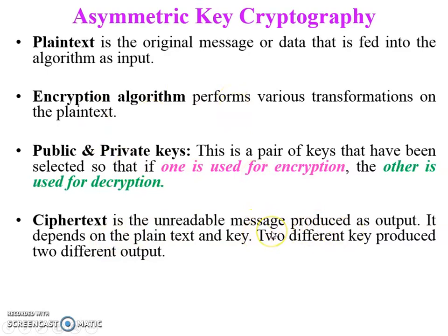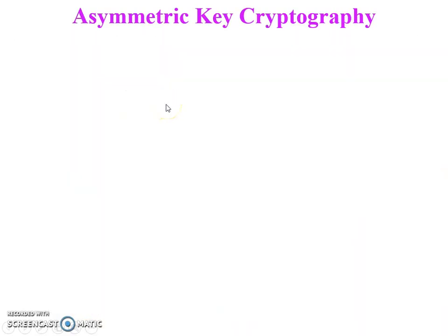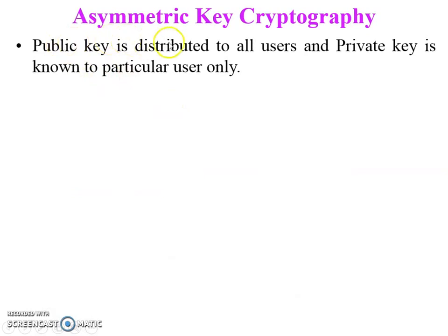The six elements of the asymmetric cipher model are: plain text, encryption algorithm, private key and public key (this is the key pair), ciphertext, and decryption algorithm. These are the essential ingredients of the asymmetric cipher model, and definitions of these elements were discussed in the basic terminology of the network security video.